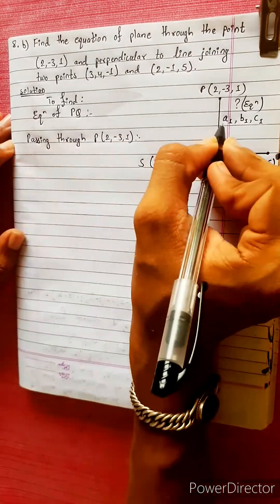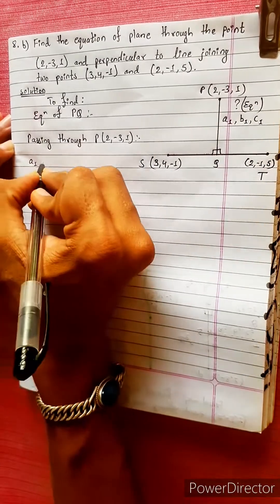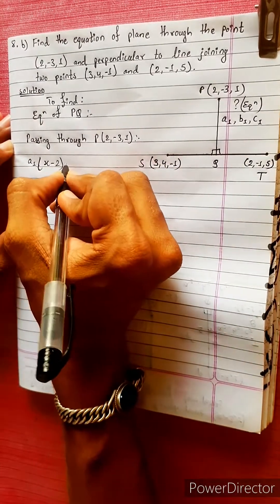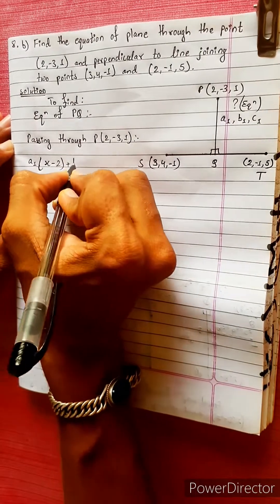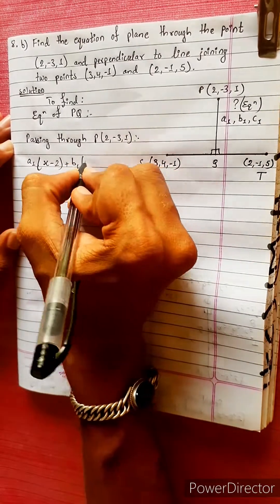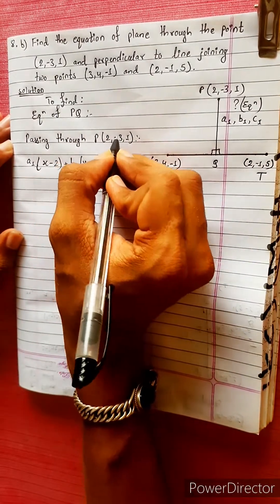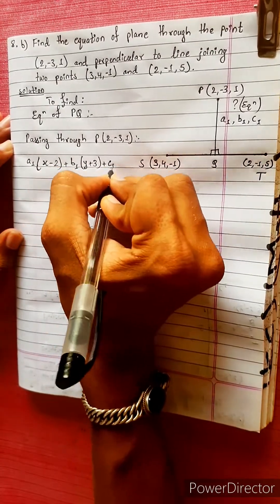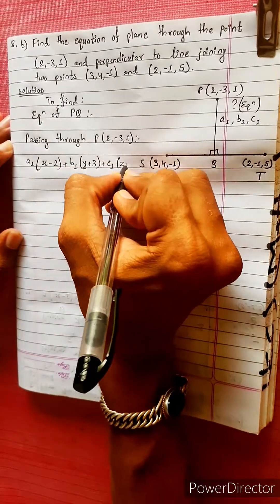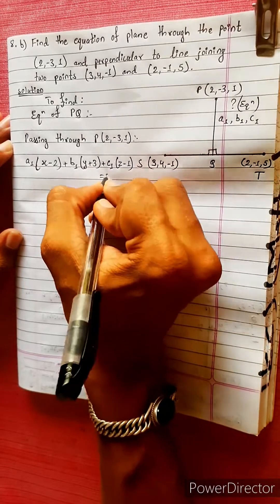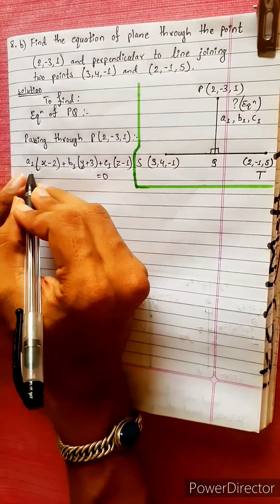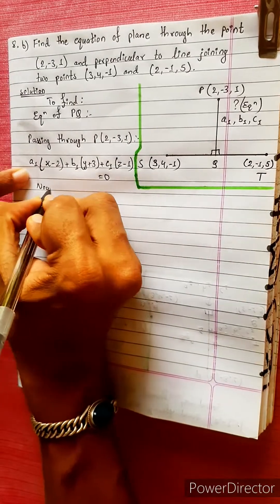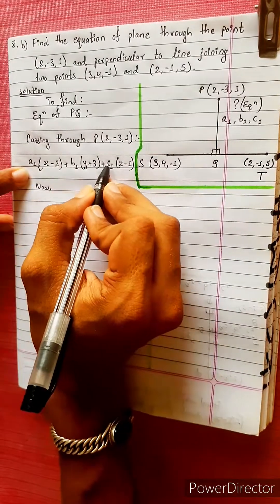The direction ratios are A1, B1, C1. The general equation of the plane is: A1(x - x1) + B1(y - y1) + C1(z - z1) = 0. We will find the values of A1, B1, C1.